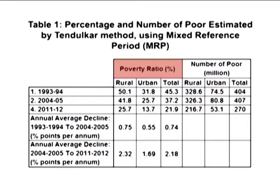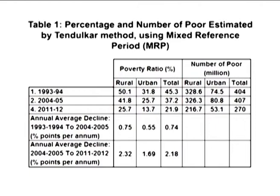It can be concluded that the rate of decline in the poverty ratio during the most recent seven-year period (2004-05 to 2011-12) was about three times that experienced in the eleven-year period of 1993-94 to 2004-05. The percentage of persons below the poverty line in 2011-12 has been estimated at 25.7 percent in rural areas, 13.7 percent in urban areas, and 21.9 percent for the country as a whole. The respective ratios for rural and urban areas were 41.8 percent and 25.7 percent, and 37.2 percent for the country as a whole in 2004-05.